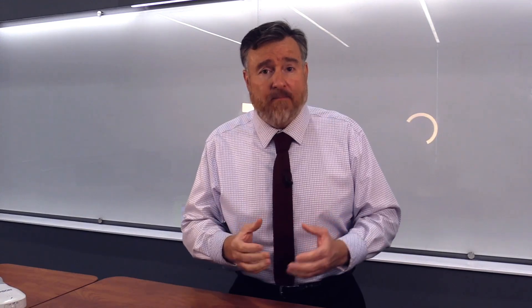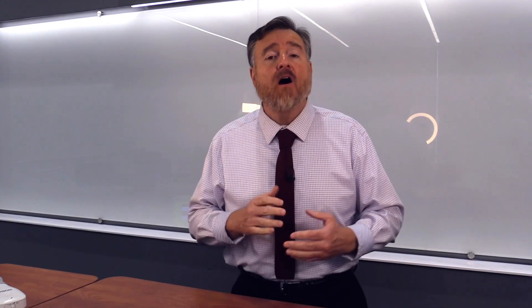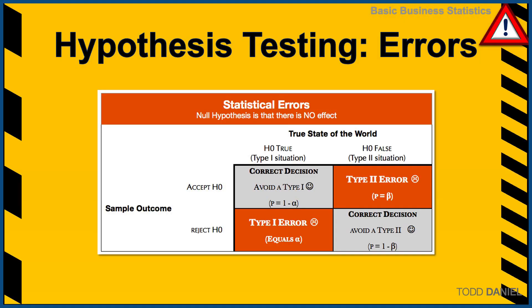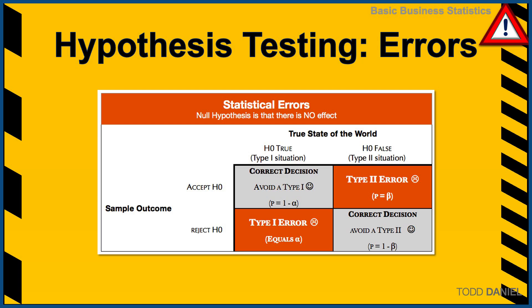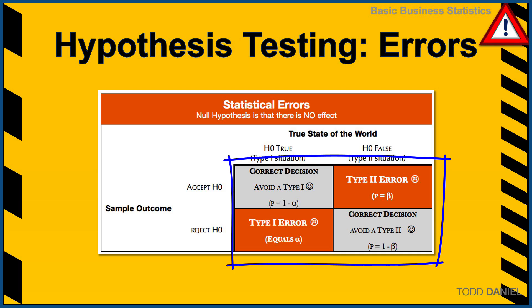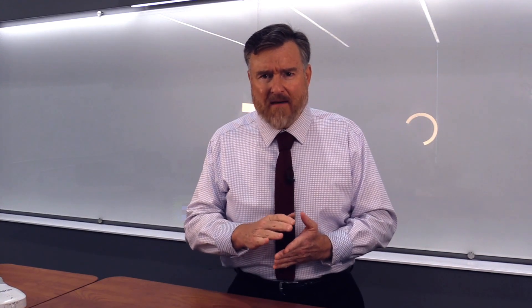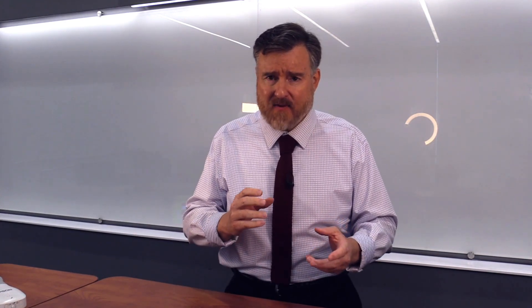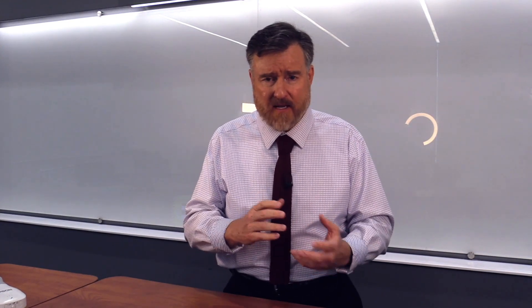Let me begin with an example of how errors in hypothesis testing are typically explained in a textbook or some other table that you might find. Here we have a table of statistical errors. We see at the top the true state of the world, where the null hypothesis is true or the null hypothesis is false, and two potential sample outcomes of either accepting or rejecting the null hypothesis. We've cross-tabulated correct decisions with errors. This table can be difficult to follow, where we have a true state of the world and a true null hypothesis that gets rejected correctly or incorrectly.